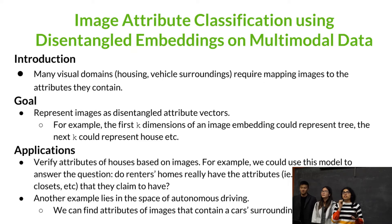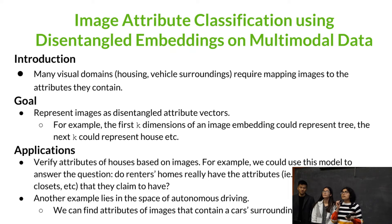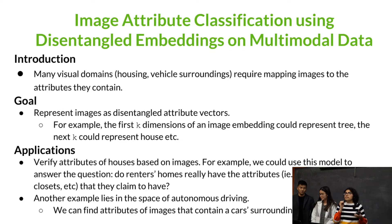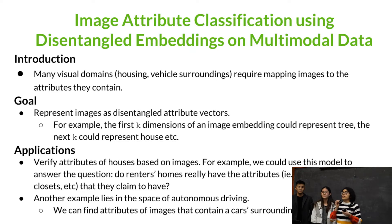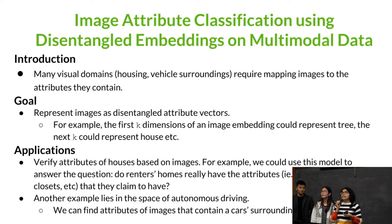Images can be thought of as a collection of attributes, and classifying these attributes can be very important. For example, say you're looking for an apartment or a home to rent, so you go on a website such as Redfin or Zillow, and you notice that every listing contains a set of images — images of bedrooms, closets, bathrooms — and every listing also contains a description with features of the home such as a fireplace and hardwood floors. So in order to prevent fraudulent listings, we would like to verify that the homes contain these features, and we can do this by labeling the images.